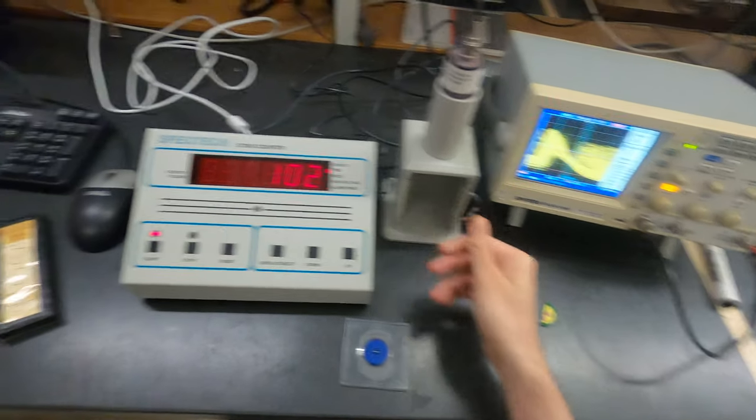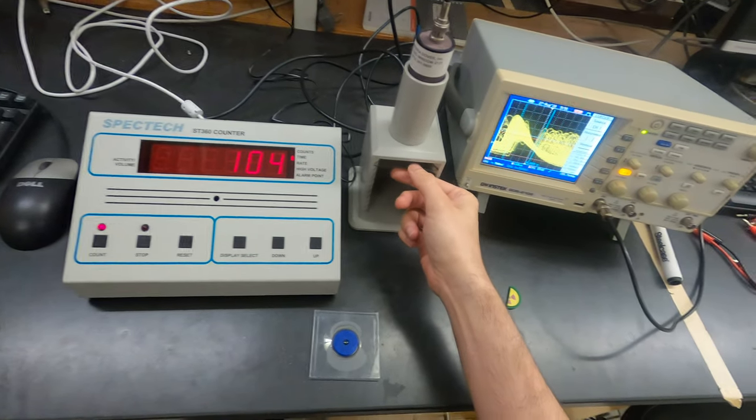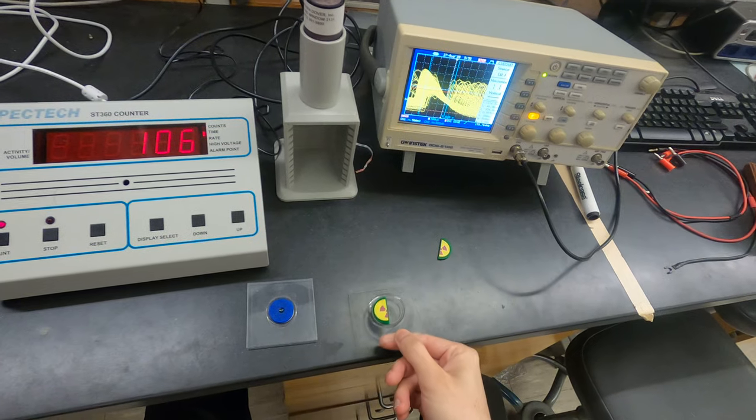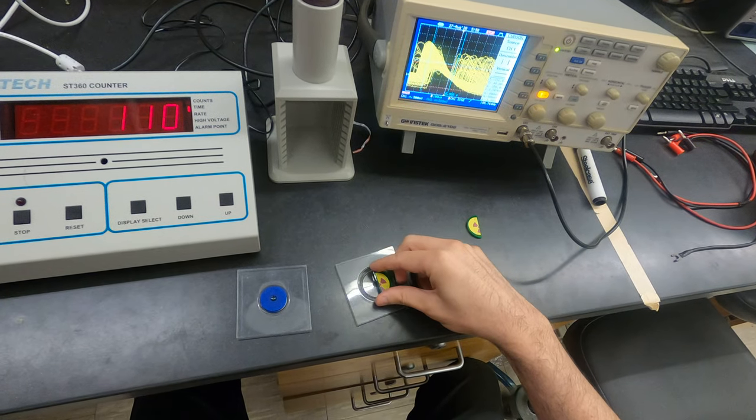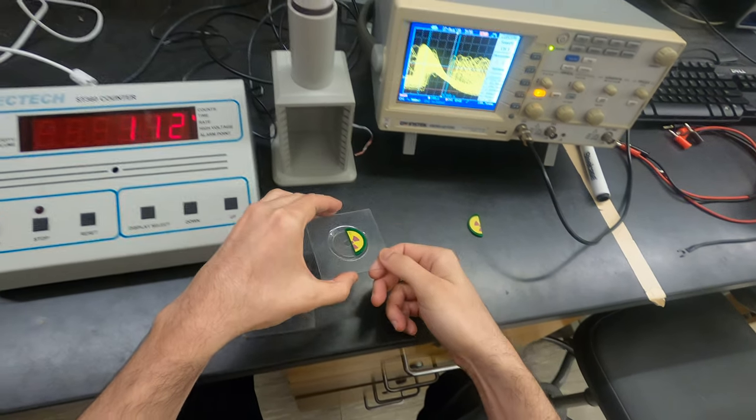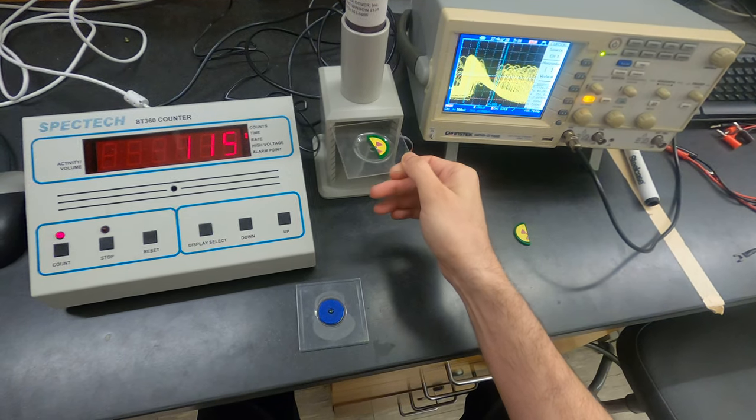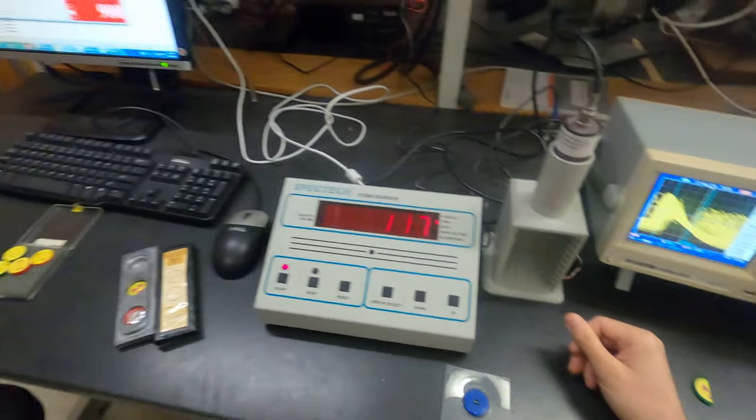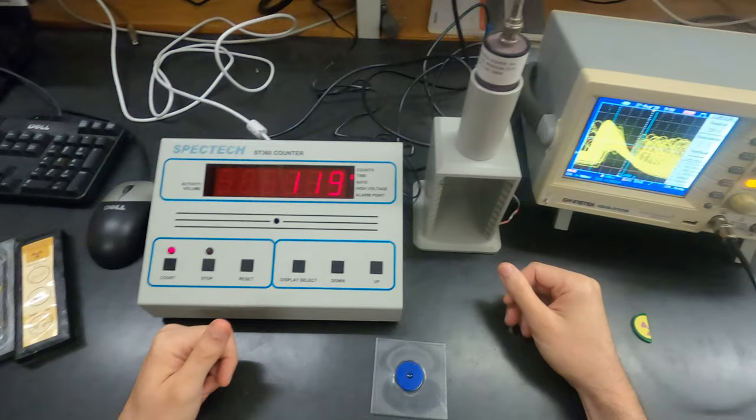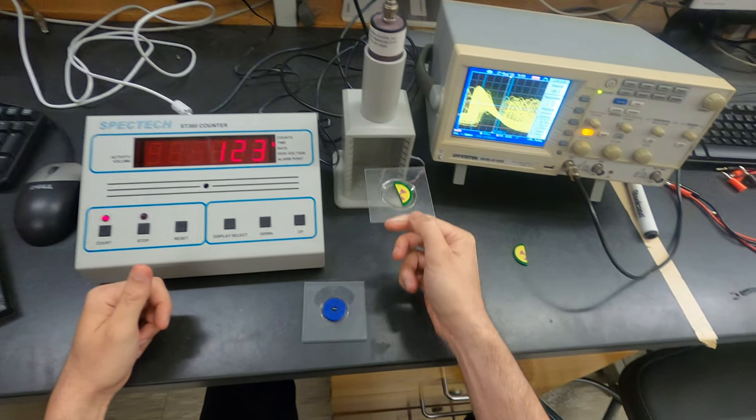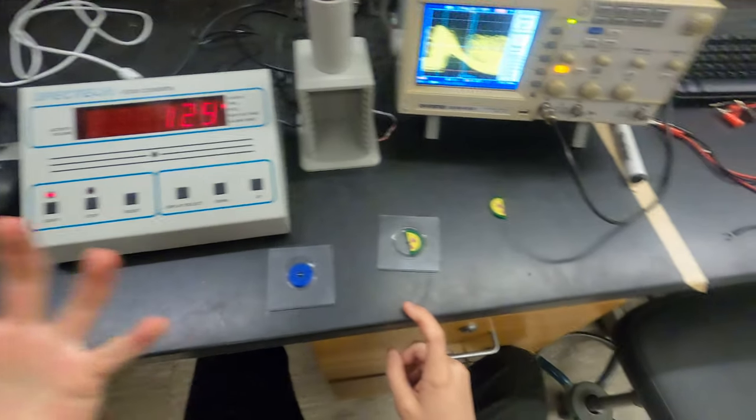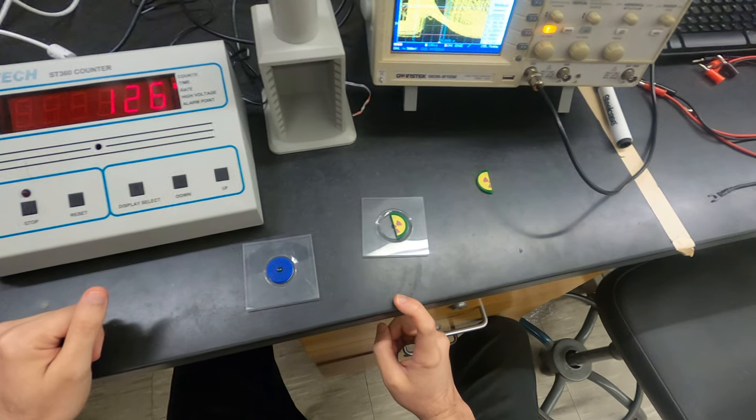It's set in the same place. After measuring and writing the number of counts, you measure the second source. After you measure the number of counts, you can use the formula that you have in your notes.